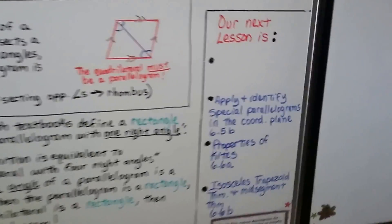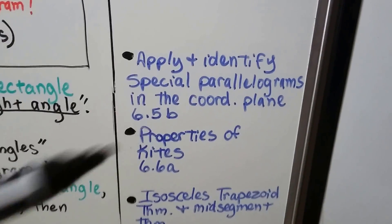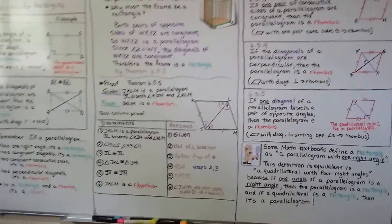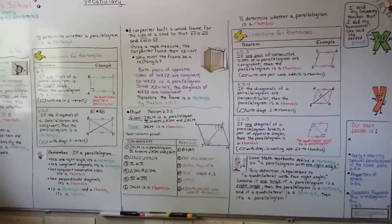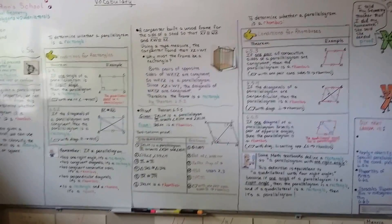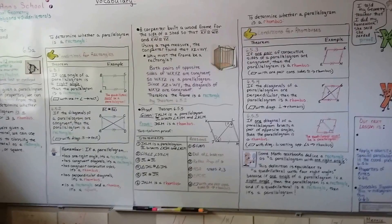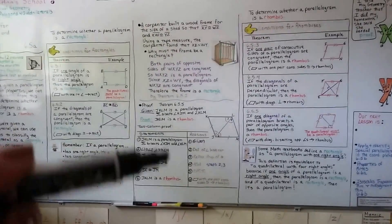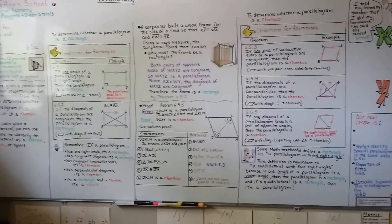Our next lesson is applying and identifying special parallelograms in the coordinate plane — that's 6.5b. Then we'll talk about kites and isosceles trapezoids. If you're writing down these theorems, try to draw little pictures so it helps you remember what each theorem does. I would keep a notebook with all these proofs, because even if it's not the exact proof you need for homework or a test, it will help you understand the train of thought.